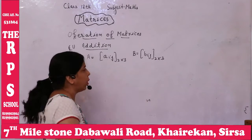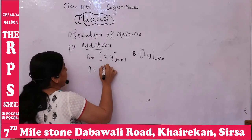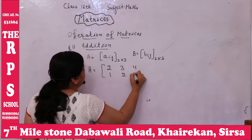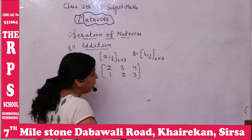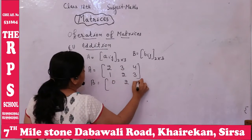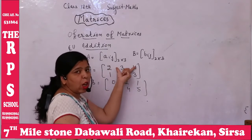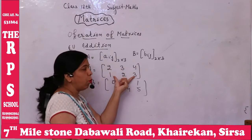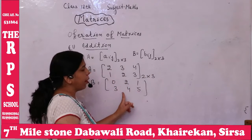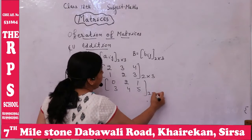So if we can add them, let's take an example. Matrix A is [2, 3, 4; 1, 2, 3]. This is matrix A. And matrix B is [0, 2, 1; 3, 4, 5]. First, check the order: rows are 2, columns are 3 — so order is 2×3. For B also, rows are 2, columns are 3 — order is 2×3.